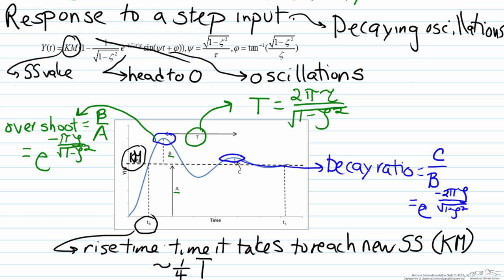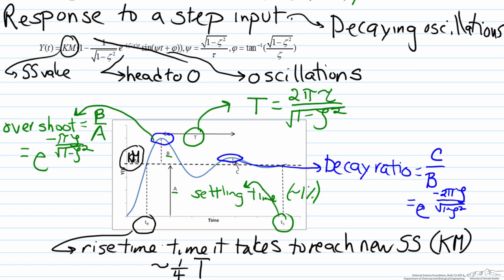Finally, the last value of interest is ts, the settling time. The settling time gives an idea of how quickly the process consistently stays within some certain percentage of the steady state value km. Depending on what settling time criterion you use, values will differ, but for approximately 1 percent settling time, this can be represented as 5 tau over zeta.